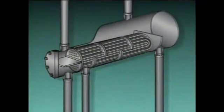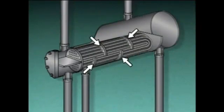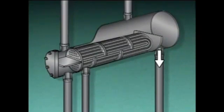Kettle-type reboilers are a type of shell and tube heat exchanger. They're primarily used to vaporize process liquids from a distillation column and return only the vapor back to the column. The major parts of this reboiler include a shell, a tube bundle, a tube inlet, a tube outlet, a shell inlet, baffles, a vapor outlet, an overflow weir, and a liquid outlet.